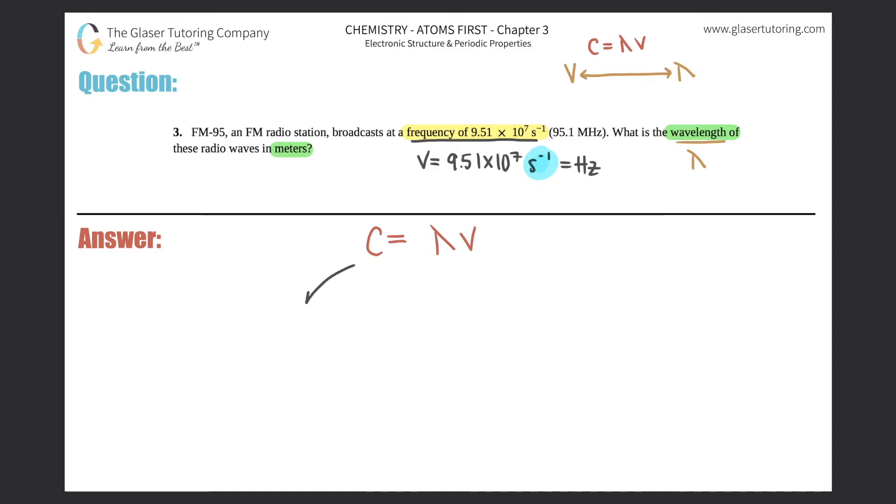C is a constant number. C is the speed of light, which is 2.998 times 10 to the eighth meters per second. This is a constant. You should memorize this number and this formula.